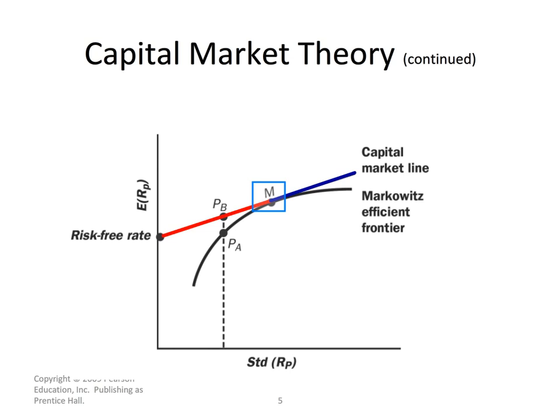All individuals will hold that market portfolio M. If they want less risk, rather than holding on the efficient set, they will hold portions of the risk-free asset and the market portfolio M, and that will occur on the red portion of the capital market line. The individual will be lending money at the risk-free rate to other individuals while also holding the market portfolio. If the individual wanted no risk, they would lend all their money and their proportion in the market portfolio would be zero.